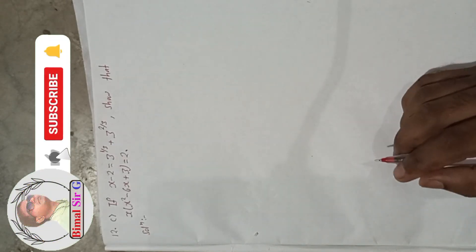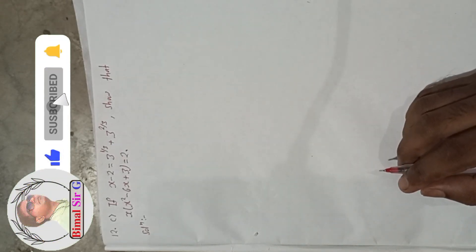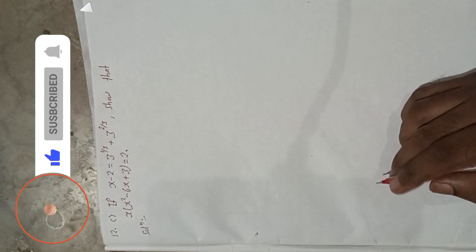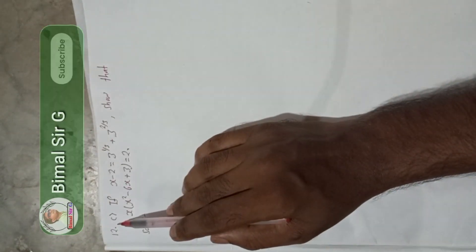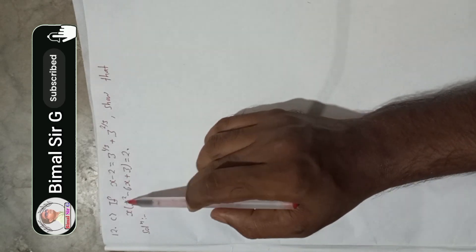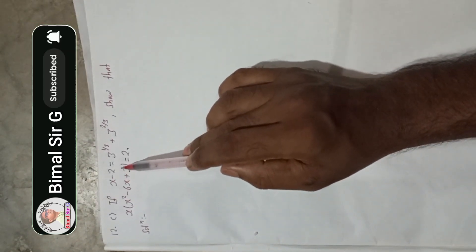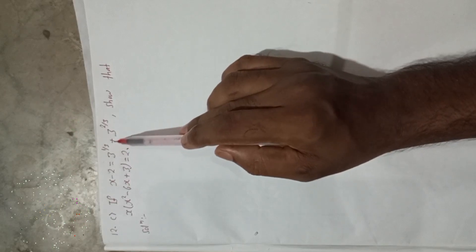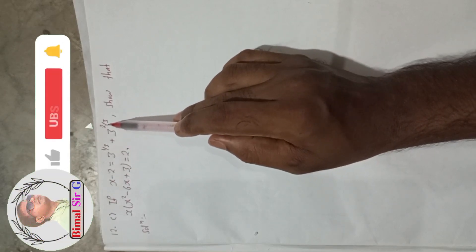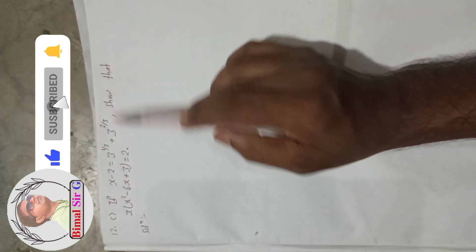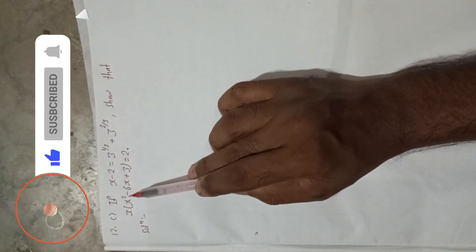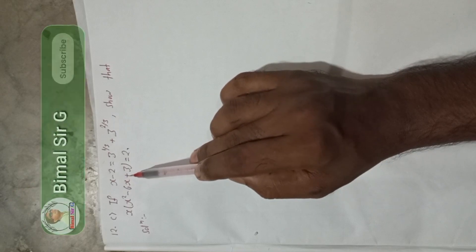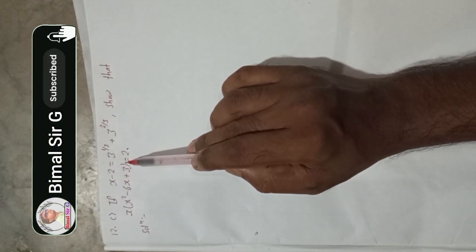Hello everybody, welcome back to Bimal Sarji's YouTube channel. Now I am going to solve question number 12c. If x minus 2 is equal to 3 to the power 1 by 3 plus 3 to the power 2 by 3, show that x(x² - 6x + 3) is equal to 2.